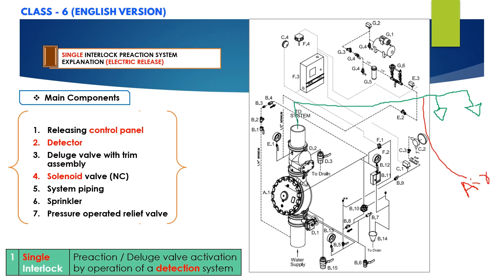Electric release systems utilize a deluge valve and a pneumatically pressurized automatic sprinkler system. Unlike dry type, the system piping here is pressurized only for supervisory purposes — this feature serves to prevent undetected leaks. If the system piping or sprinklers are damaged, supervisory pressure is reduced and a low air alarm is activated in the panel. Since the main purpose of a pre-action system is to not allow water to discharge in a no-fire condition, supervision ensures we know if there are any leaks or damaged pipes.